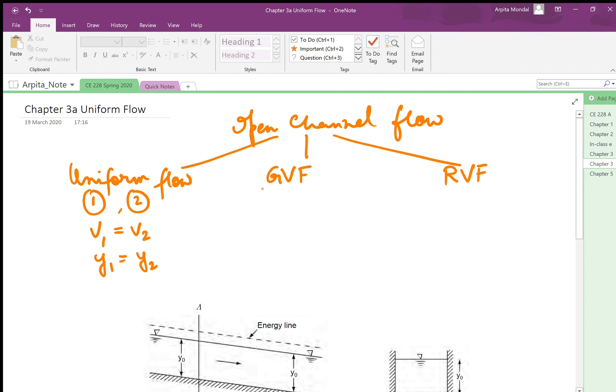In gradually varied flow, these depths and velocities are not equal. However, at each section we assume that the streamline curvatures are small, and this implies that if we assume the pressure distribution to be hydrostatic at each section, then that assumption is correct.